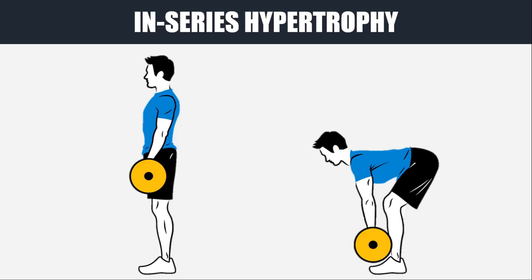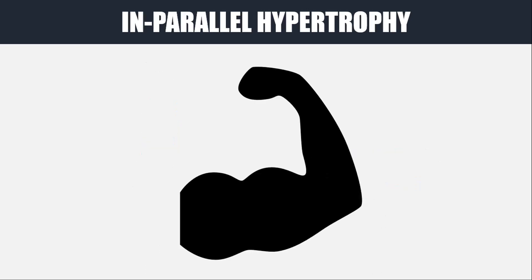In-series hypertrophy can be produced by loading muscles at long lengths. So exercises such as Romanian deadlifts, full-range squats, full-range chin-ups, and chest flies would all be good options to induce in-series hypertrophy in the relevant muscles. In-series hypertrophy doesn't occur to the same extent as in-parallel hypertrophy, and it may only be sought by individuals in very particular cases. The rest of this presentation will therefore focus on in-parallel muscle hypertrophy.